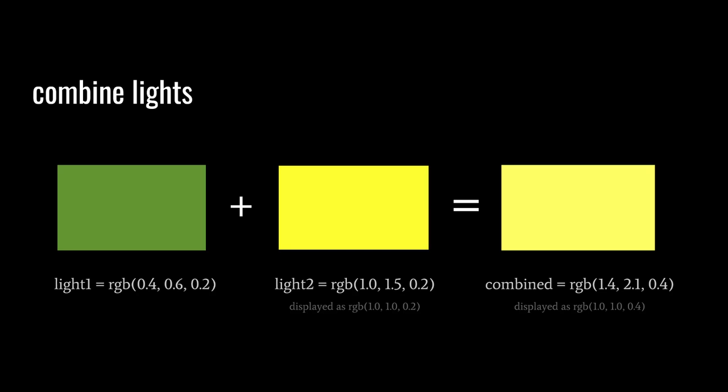We know the base color of a fragment — usually sampled from a texture, from vertex color attributes, or blended from multiple sources. We then multiply that base color by a combined light color. If there are multiple light sources hitting a point, light acts in an additive fashion: we add the different light colors together to get the combined light value. For example, adding a green light and a yellow light gives a combined light of (1.4, 2.1, 0.4).